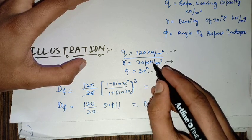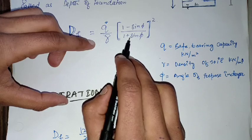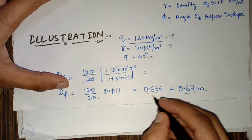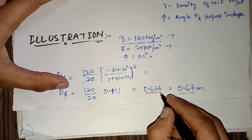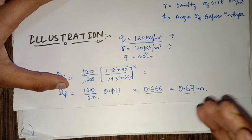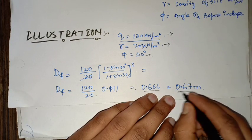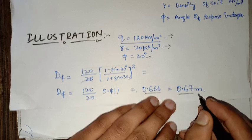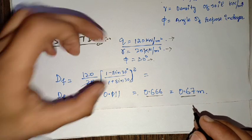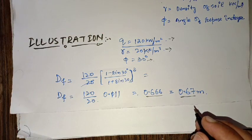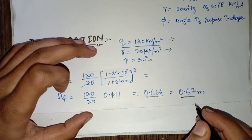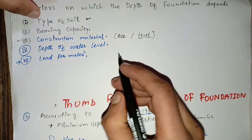By putting these values into Rankine's expression, the depth of the foundation comes out to be 0.666, which is nearly 0.67 meters. So for this case, we have to provide 0.67 meters of depth of foundation.